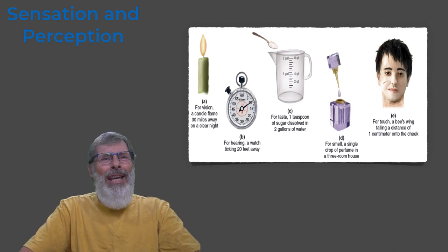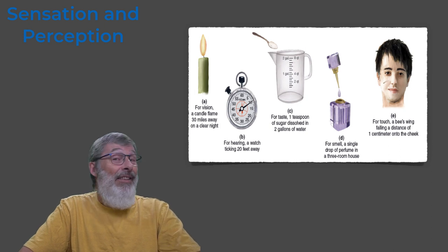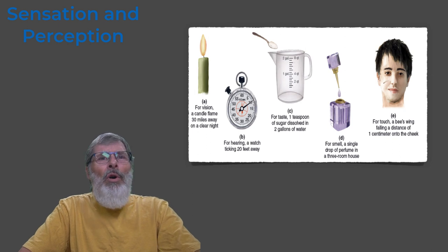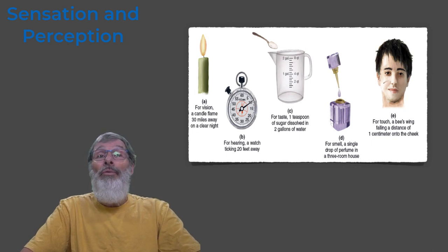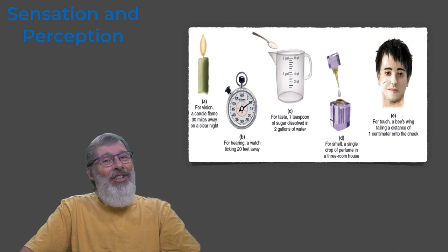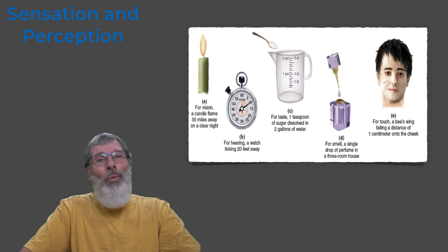Taste: being able to taste a teaspoon of sugar that's dissolved in eight liters of water. Smell: about one drop of perfume diffused throughout a small house. So that's about one part in 500 million. Touch: the pressure of a wing of a fly falling on your cheek from a distance of one centimeter.